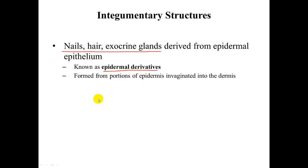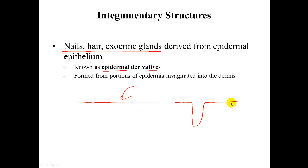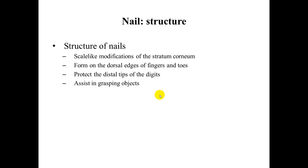If you think of taking something like a finger and punching it down into your skin, you will form an invagination into the skin, and then things like a hair can come out, or we can look at something like a nail itself on the end of a finger. So each of these has arisen from the epidermis itself. The structure of nails is a modification of the stratum corneum, which is the uppermost level of the epidermis.